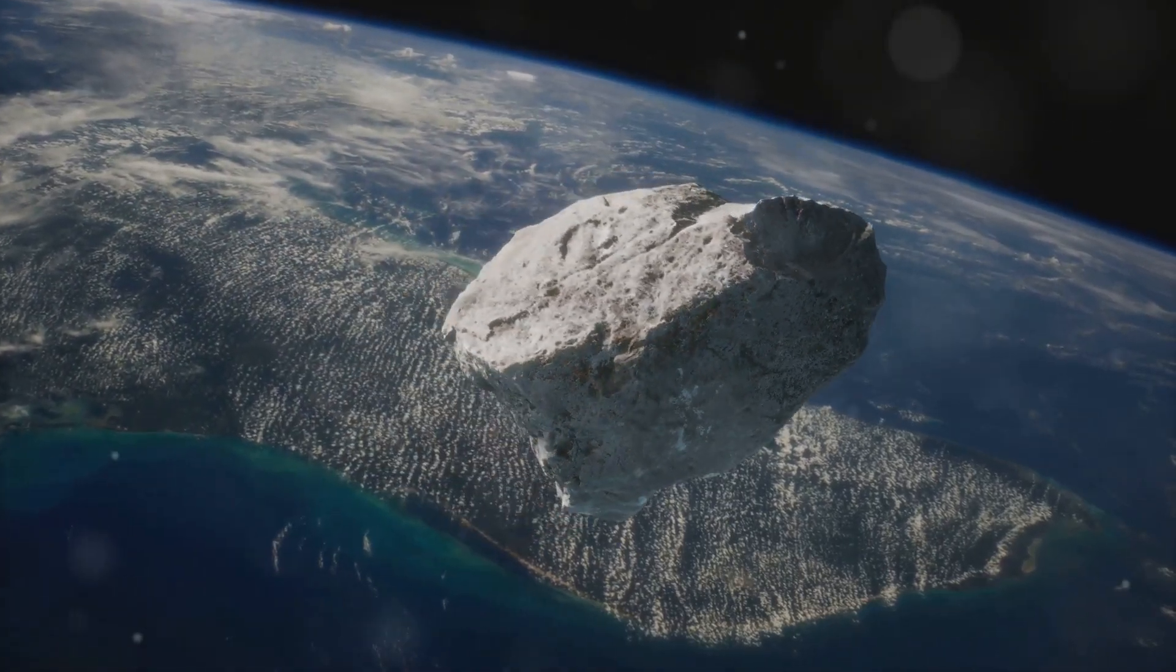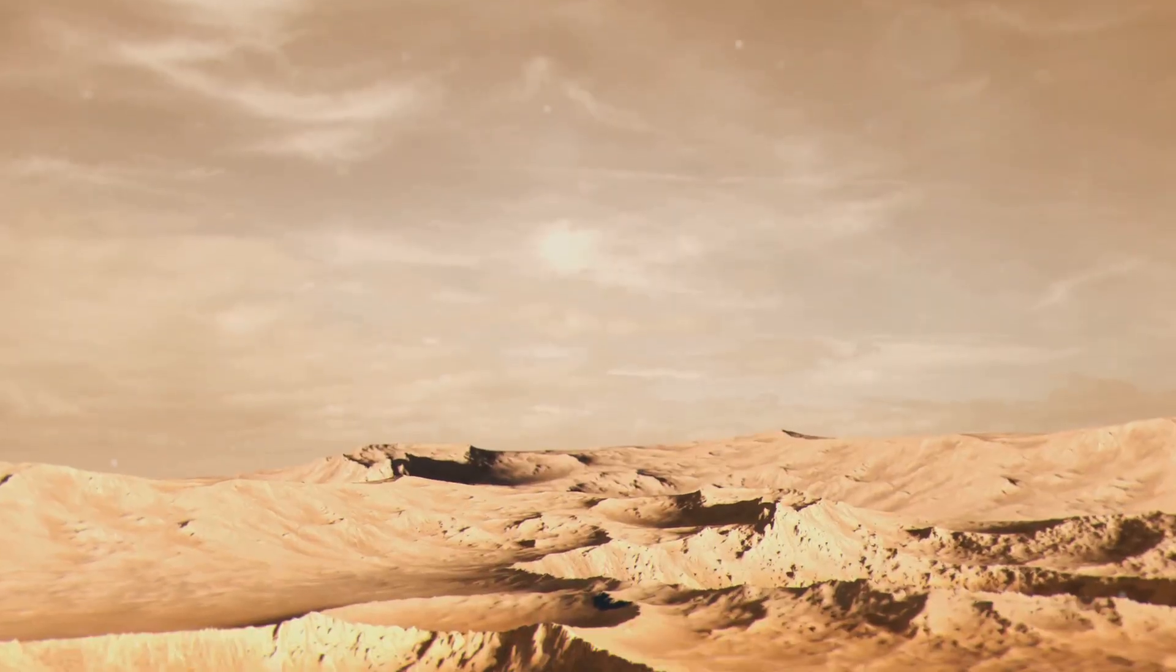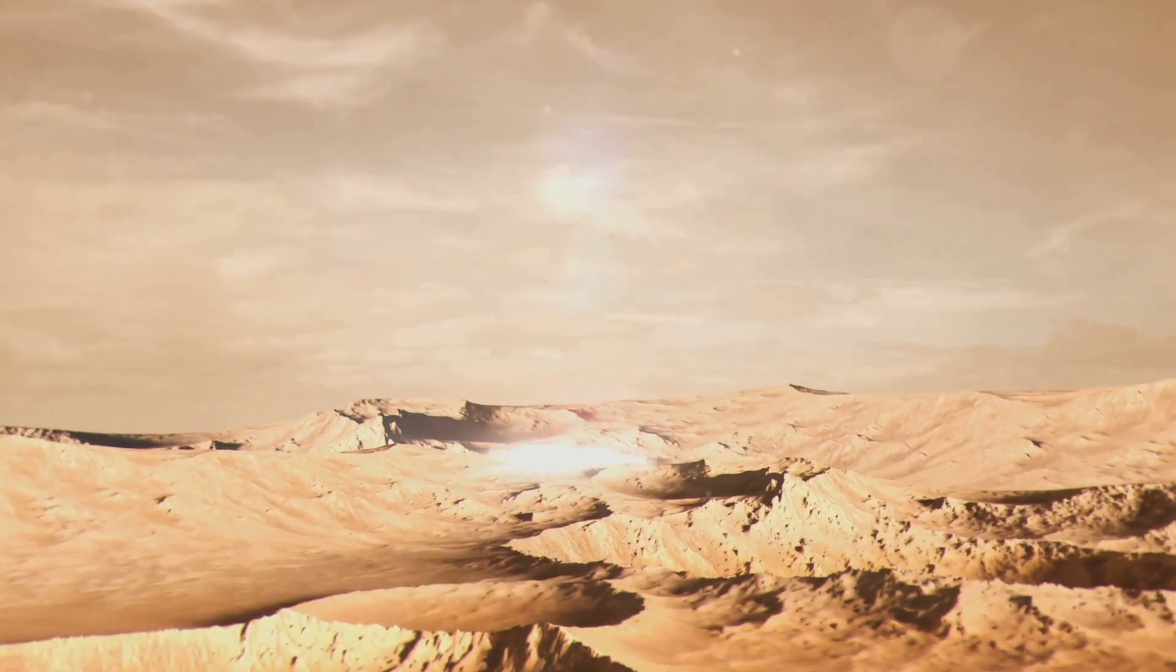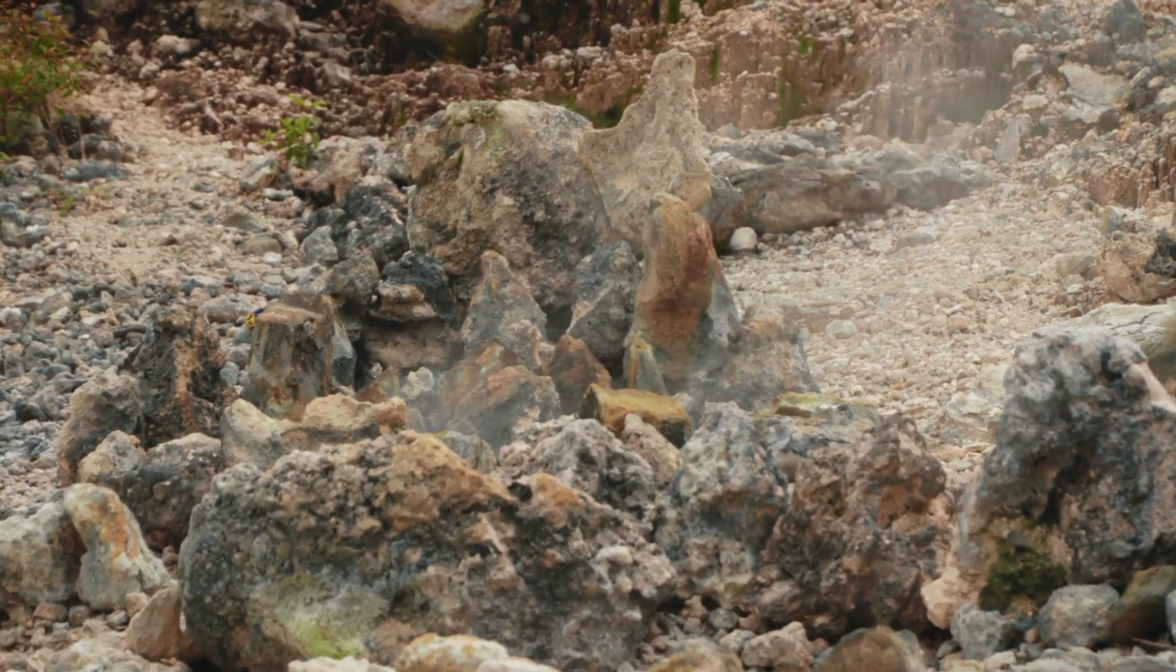Asteroids and comets, remnants from the solar system's formation, bombarded the planet's surface, leaving behind craters and further heating the already molten landscape. But even in this hellish environment, the seeds of life were being sown.